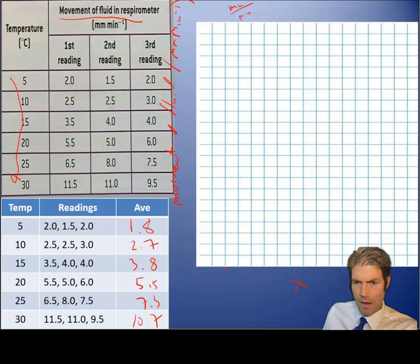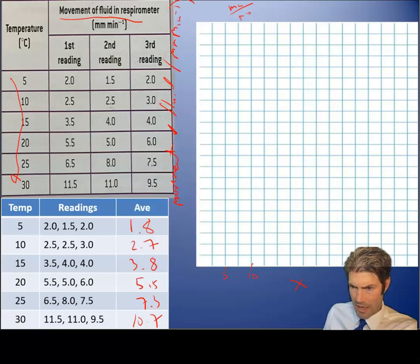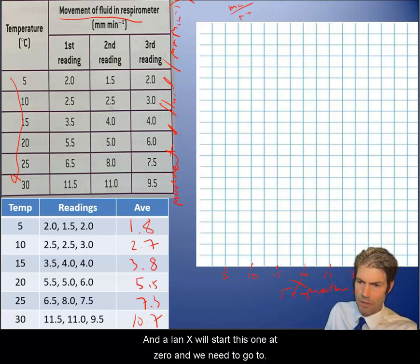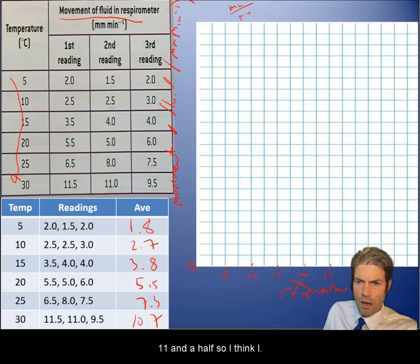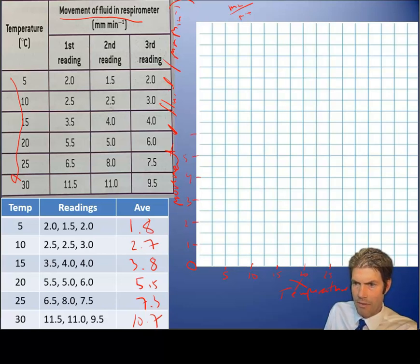This is going to be this point here. I need six, so one, two, three, four, five, six. This will be zero, and this will be 5, 10, 15, 20, 25, and 30. This will be temperature degree Celsius.